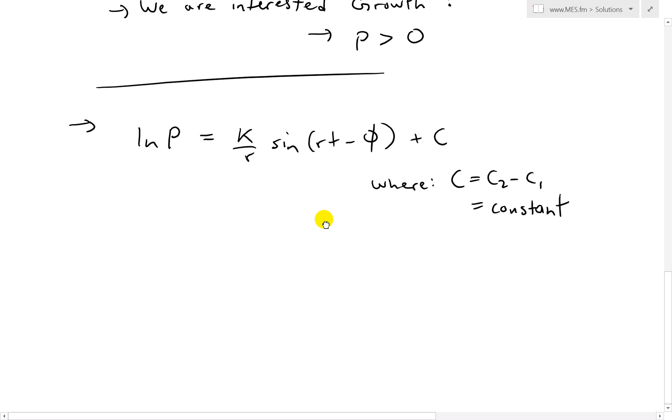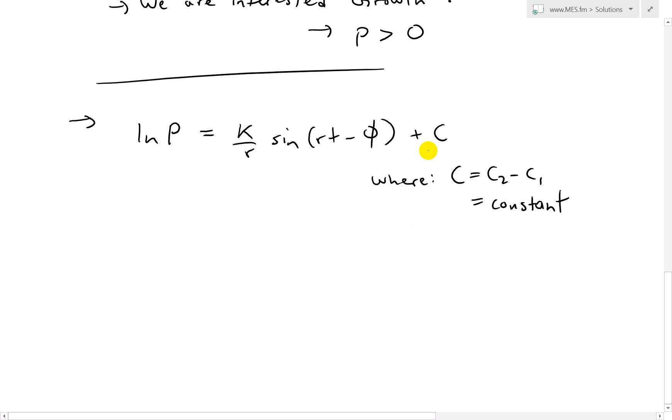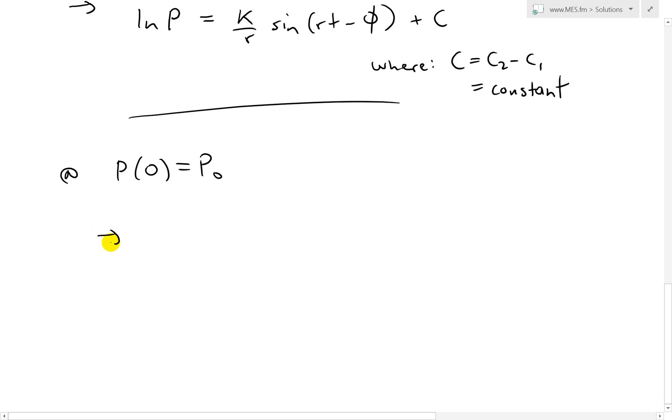So we have that. And now before we go further, we can just solve for C, because C is already separate by itself, so it's better just to start from there. So we can solve for C by knowing that P at 0 equals P0, or at the initial population. Equals ln P0 equals K over R sine of now R times 0, that's just going to be 0 minus phi, that's just minus phi, plus C, like that.